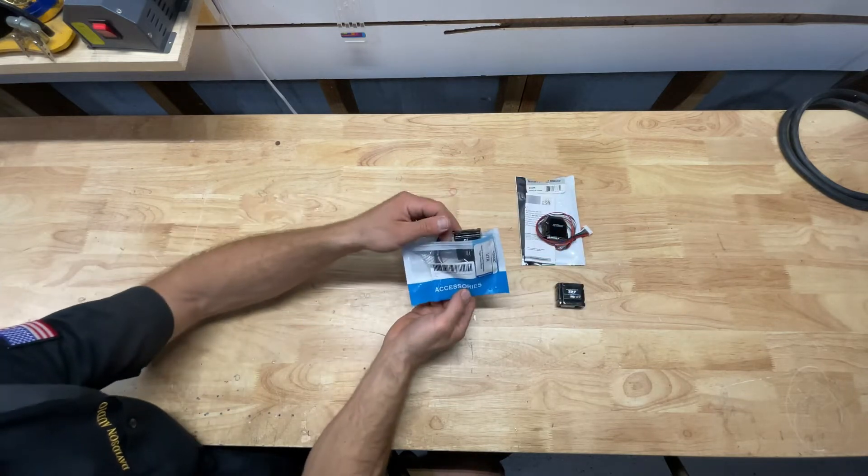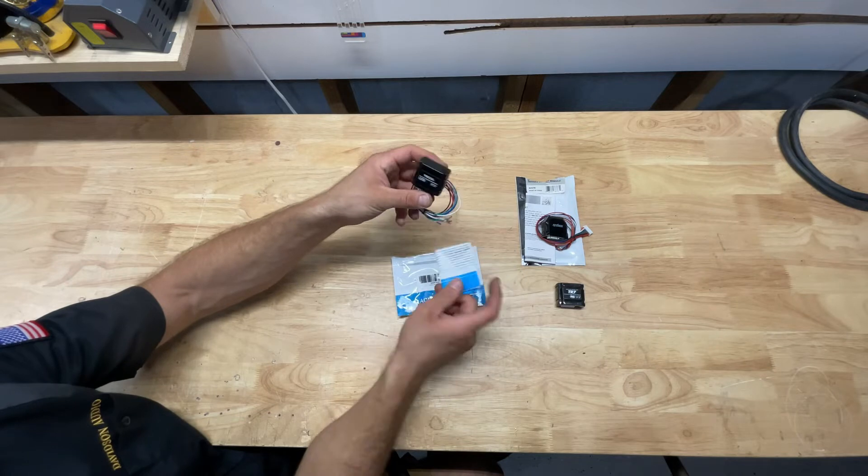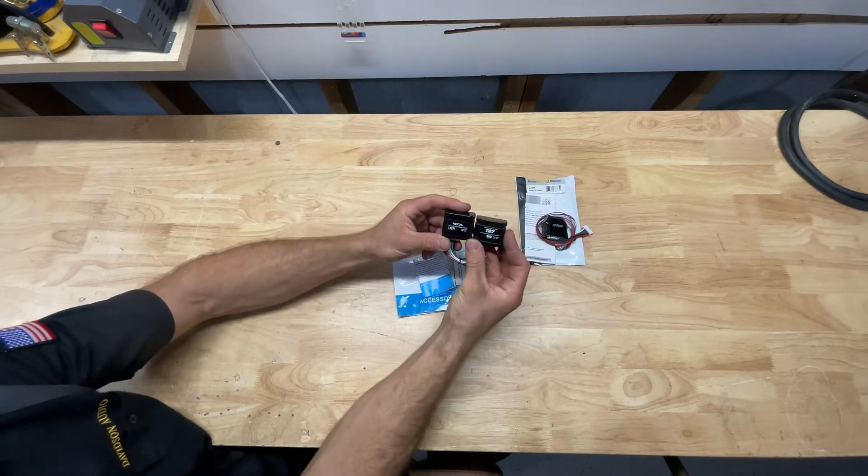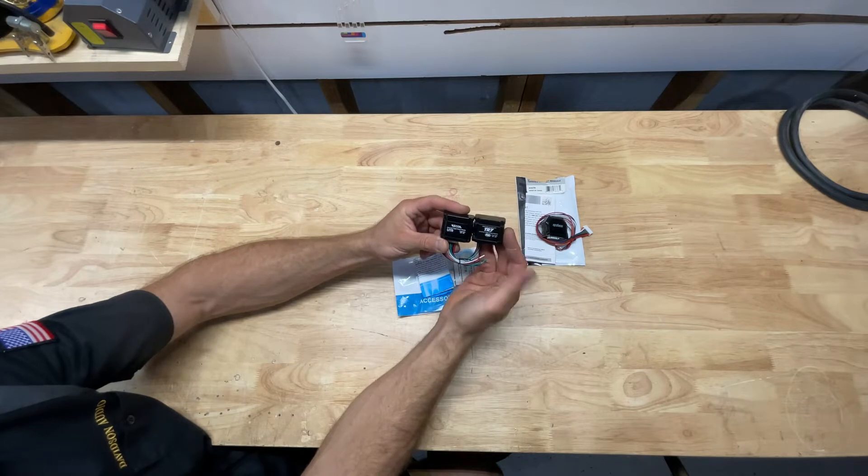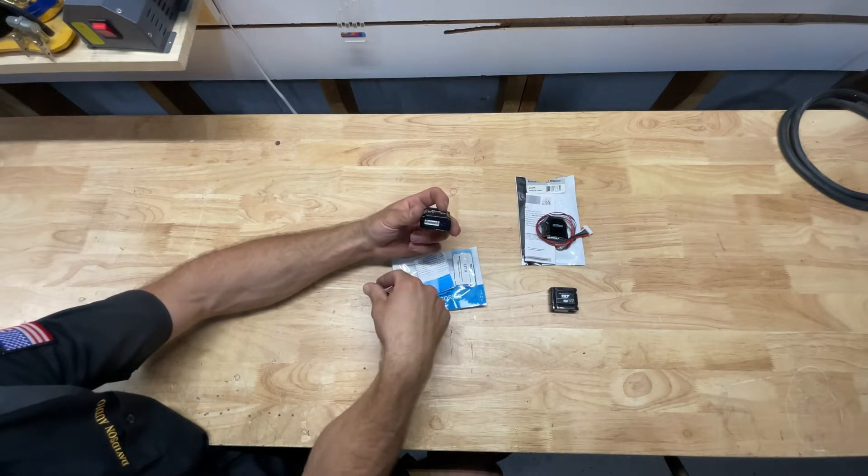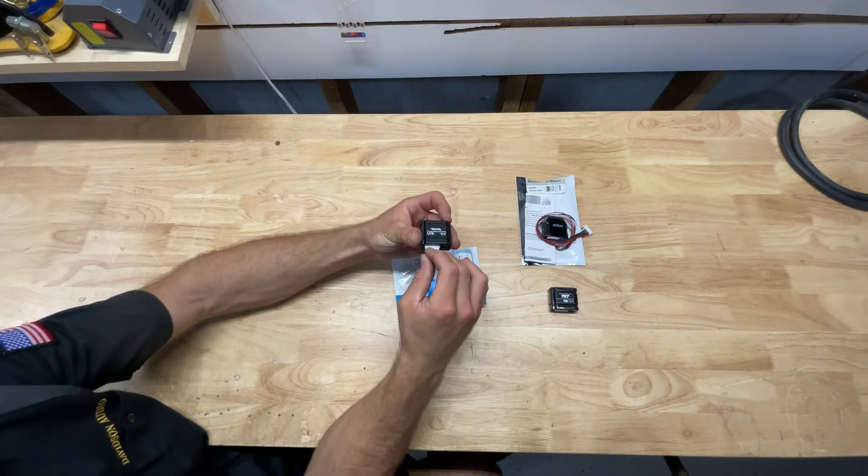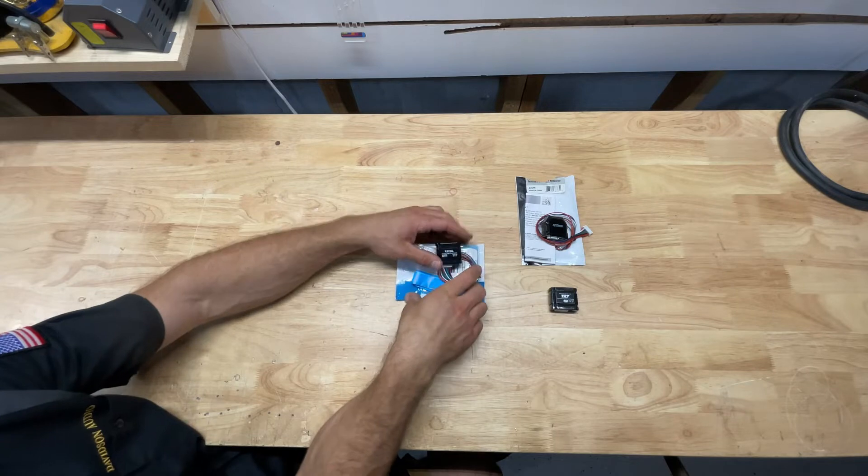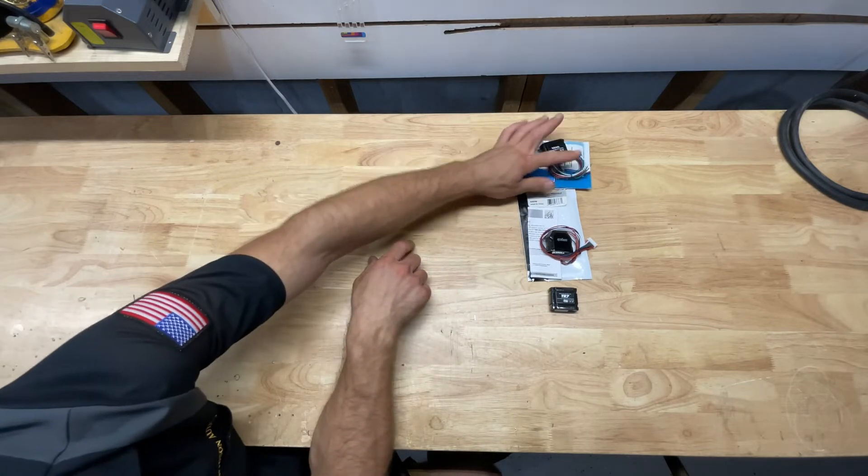Then the Recoil UTR packaging, instructions, wiring harness, exact same case as the PAC. Looks identical. Little wire harness, on-off programming switch, and that's about it. They all come with their own little instructions.